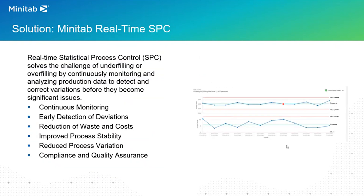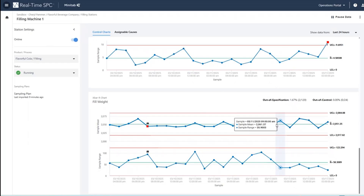We're going to do this by looking at real-time statistical process control, or real-time SPC. This solves our challenge of underfilling and overfilling by continuously monitoring and analyzing our data to detect and correct variations before they become issues. We'll use real-time SPC for continuous monitoring, early detection of problems and deviations, reducing waste and costs, improving product stability, reducing process variation, and ensuring compliance and quality assurance. So let's look at real-time SPC from Minitab.